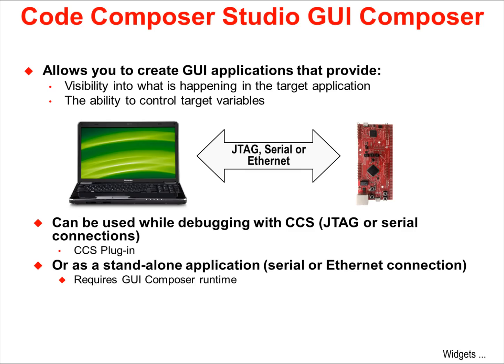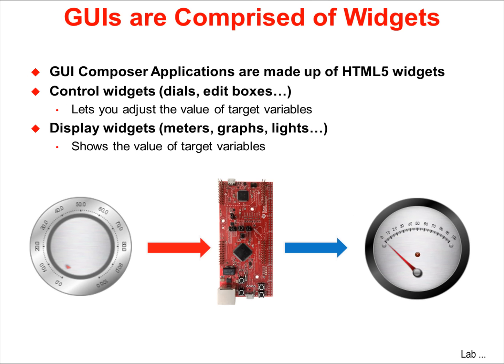Code Composer's GUI Composer tool allows you to create graphic user interface applications that provide visibility into your target code and the ability to control target variables. This can be done through the JTAG port, a serial port, or Ethernet. It can be used while debugging as a Code Composer plug-in, or as a stand-alone application through the serial or Ethernet connections. GUI Composer generates user interfaces comprised of a set of HTML5 widgets, which are connected or bound to variables or locations in the target system.